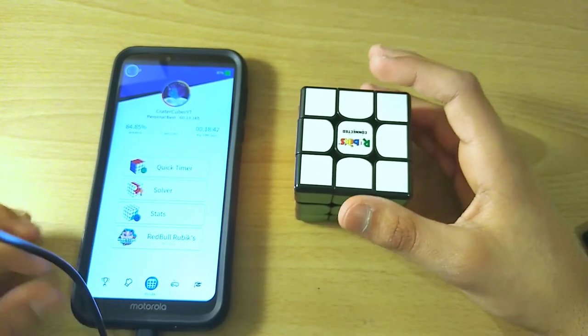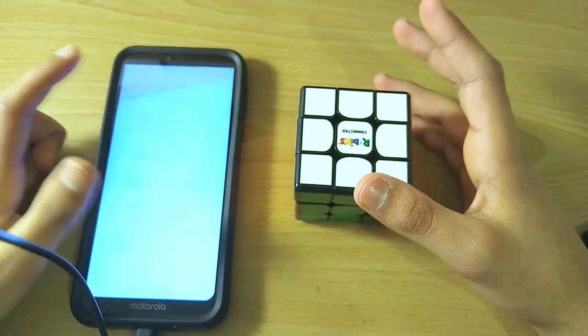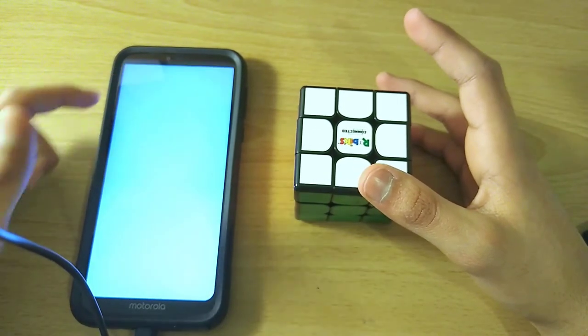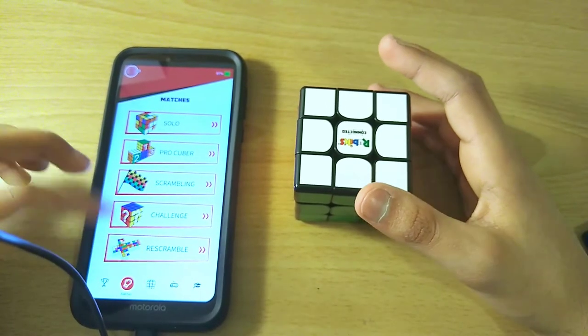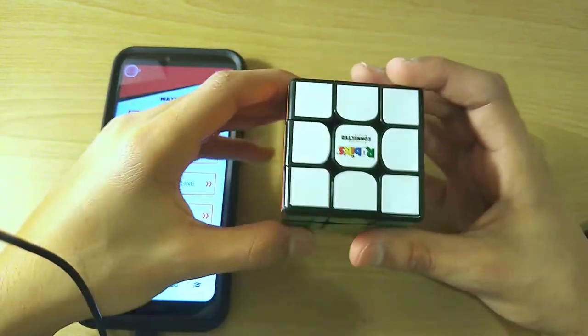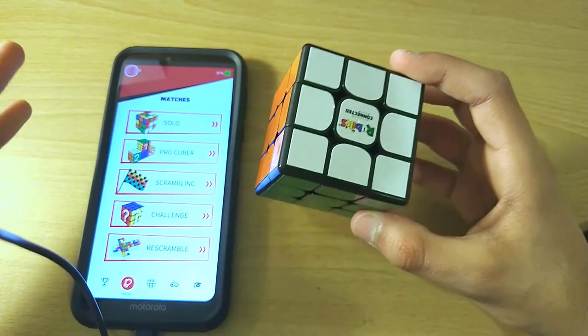Okay. So now, I'm actually gonna get into like the main part of it, which is all these match types. So first of all, you have solo, which we already saw, where it gives you the scramble, right? And then you have to solve that. And then you have re-scramble, which I'm not gonna do in this video because it'll take me a bit too long. But it basically just gives you a random state of the cube, and you have to turn your solved cube into that state. So it's like solving it, but backwards. You're solving it to a scrambled state.